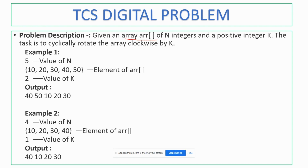An input array has been taken, where n is the size of the array, and k is a positive integer. The task is to rotate the array clockwise by k positions. An example is also given. The size of the array is 5, and the elements have been given. Each and every element has been rotated by k positions equal to 2. The output is 40, 50, 10, 20, 30.